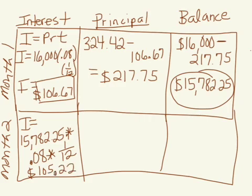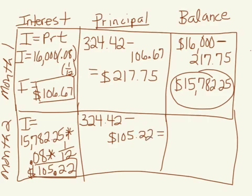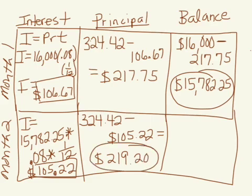$105.22. You've got to make sure to round to the hundredth place because we're talking about money. And what you will notice is that every month, your interest should be going down. Your monthly payment is still $324.42. Now you only have paid $105.22 towards interest. That means for the second month, $219.20 actually goes towards your balance.